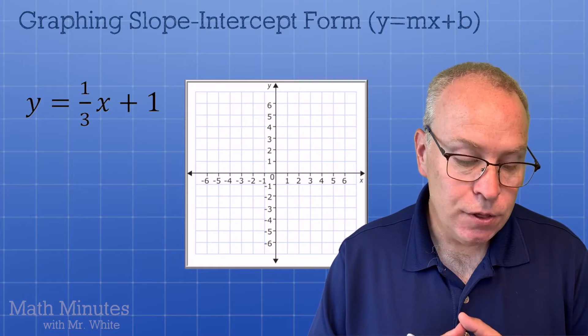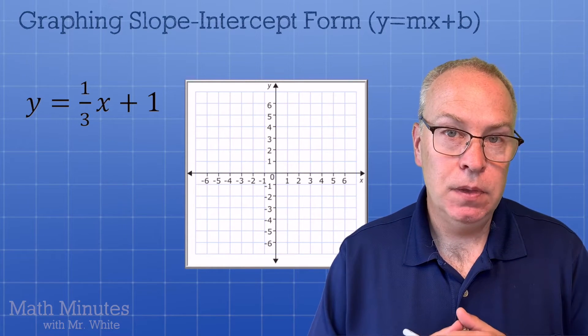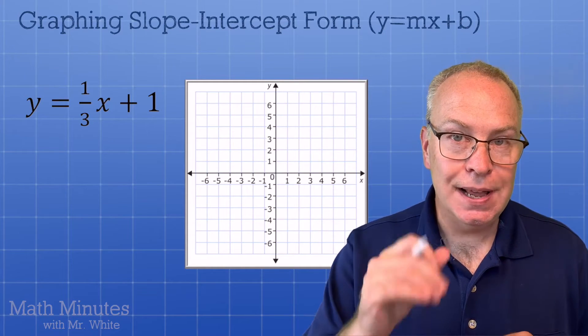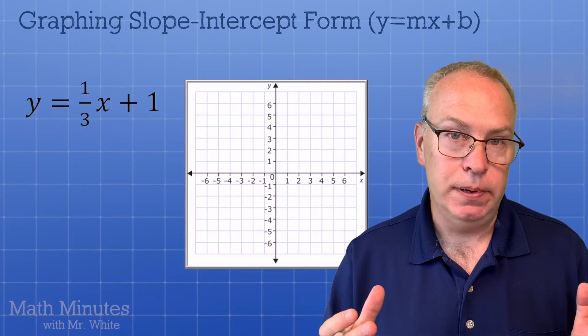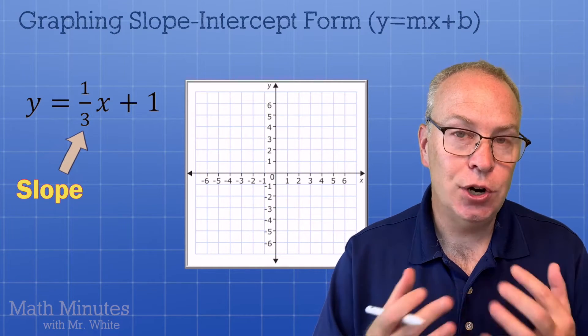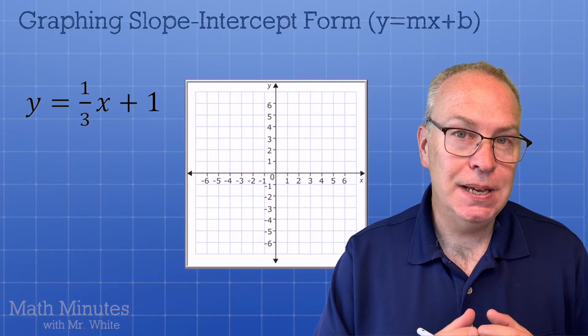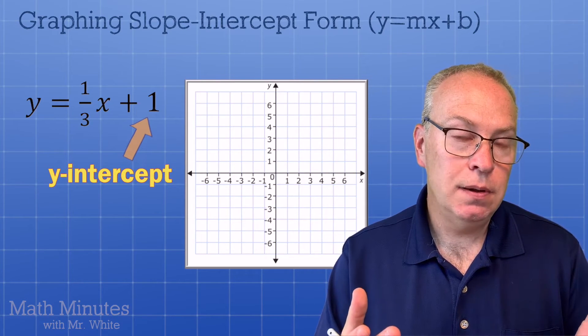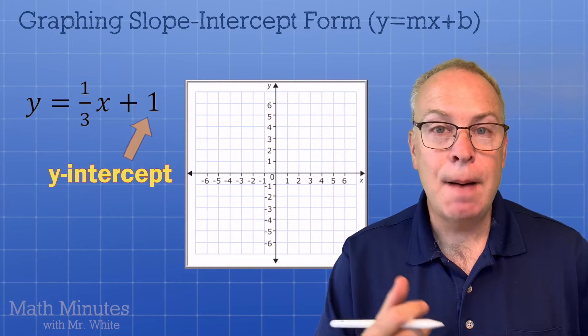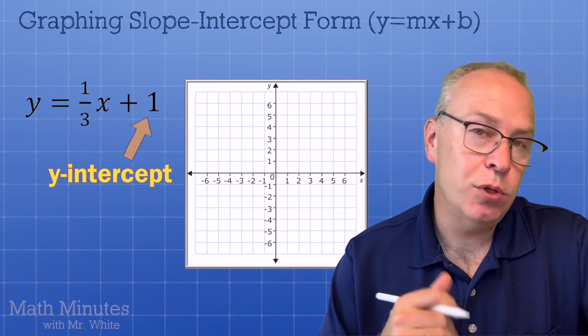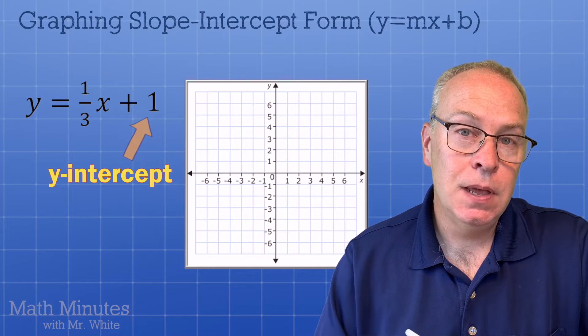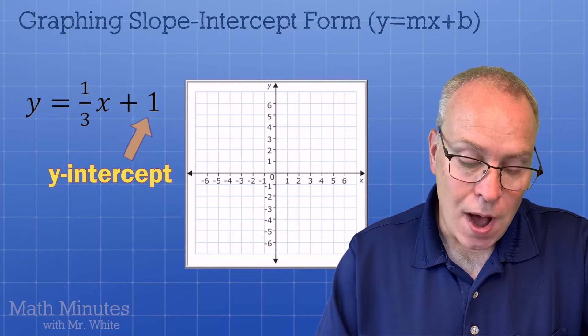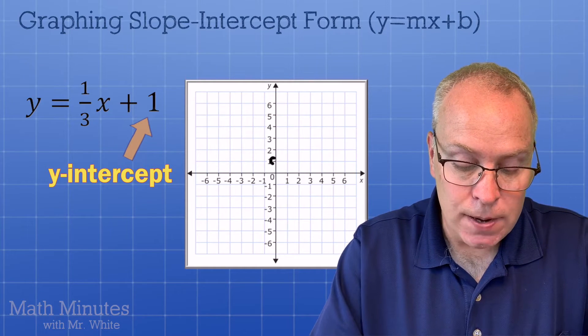y equals one third x plus one. So I see the number one third and I see the number one. Which one's the slope? The slope is the one third. That's your m. And then what is b again? b is the number one, positive one. Which way do we go? Do we go up one and put a dot or do we go to the right one and put a dot? Remember, b is the y-intercept. So we're going to go up one and put a dot.